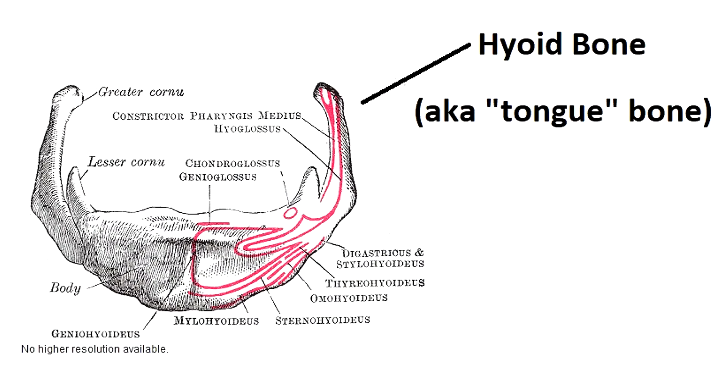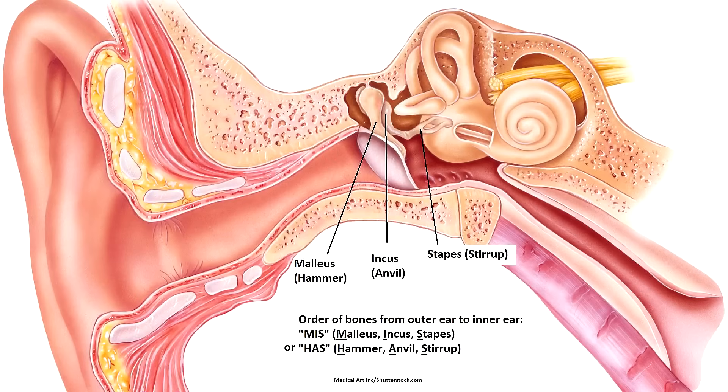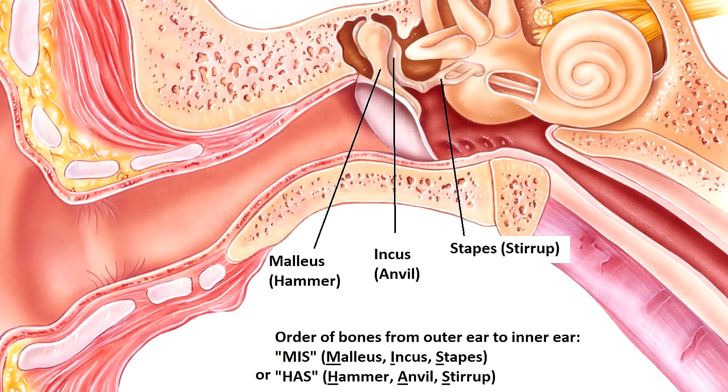There are a few other bones in this general vicinity that are not technically skull bones but are considered associated bones because they're in that general area. First we have the hyoid bone — a U-shaped bone that attaches to the tongue and helps with swallowing. Then we have the auditory ossicles, or ear bones. You have three ear bones on each side: the malleus, the incus, and the stapes, also known as the hammer, the anvil, and the stirrup, due to their appearance.